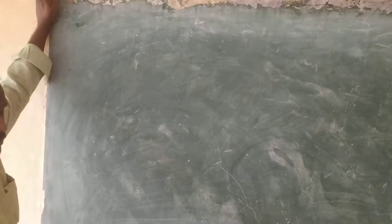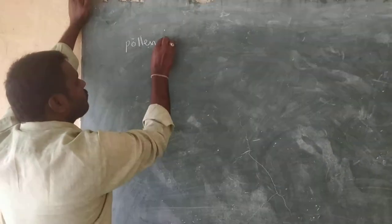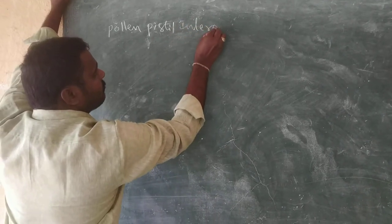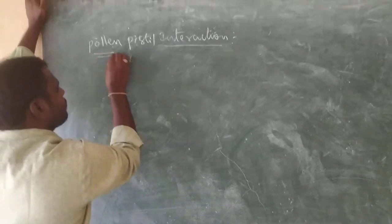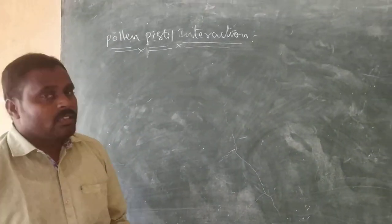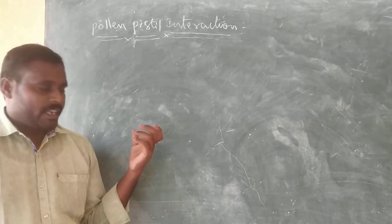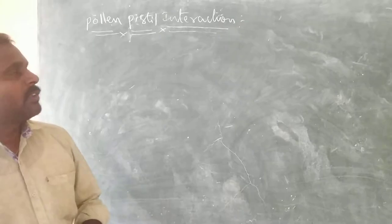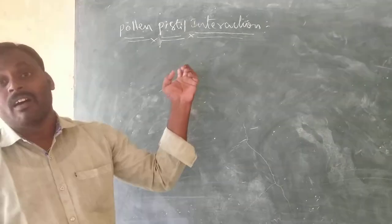Today we are going to discuss Pollen and Pistil Interactions. In previous topics we discussed about pollination — types of pollination and agents of pollination. Now, pollen and pistil interactions: pollination does not guarantee that the right pollen grain reaches the stigma.